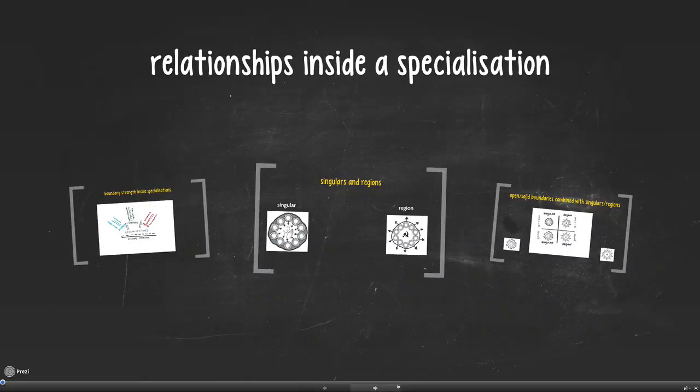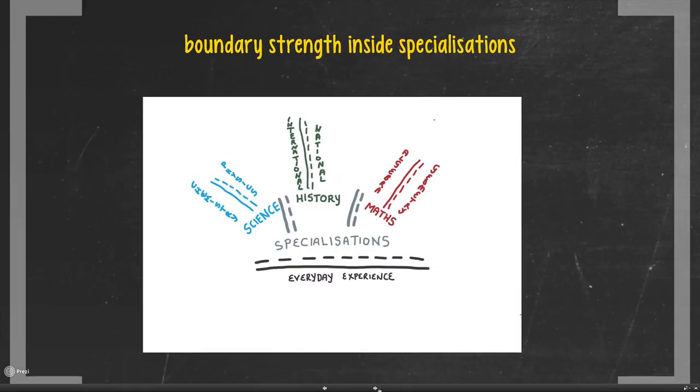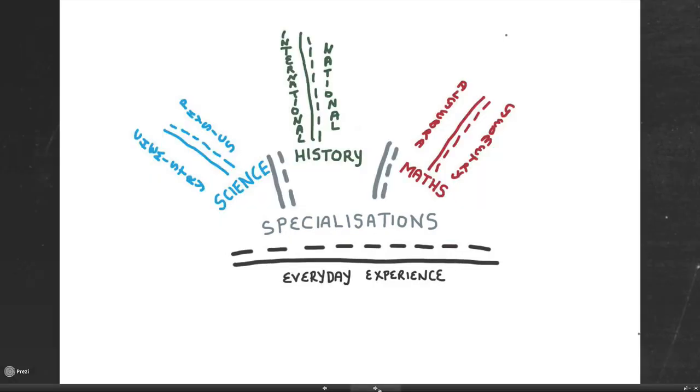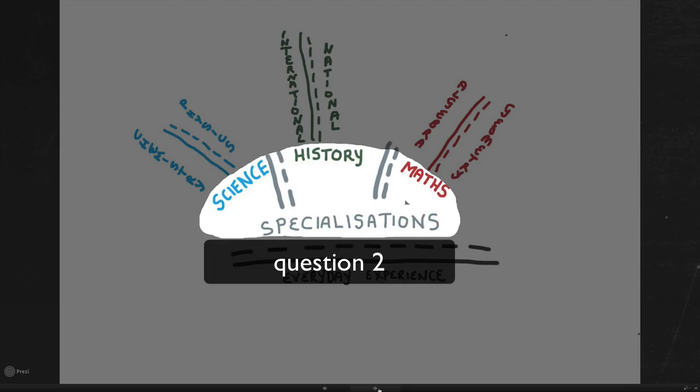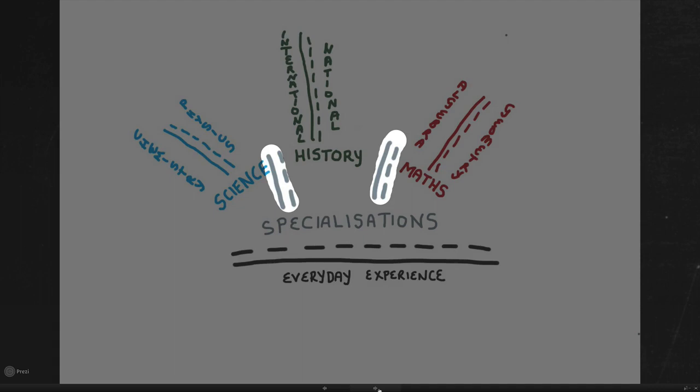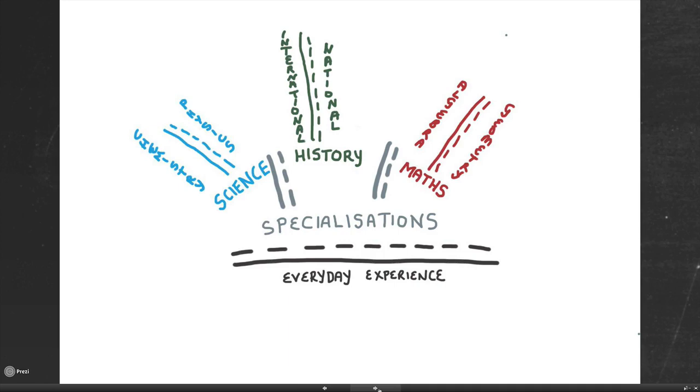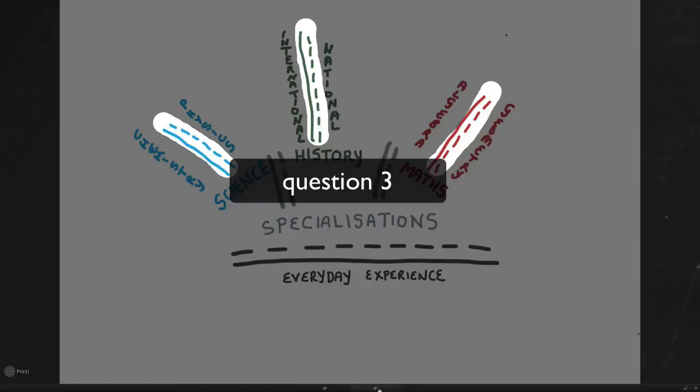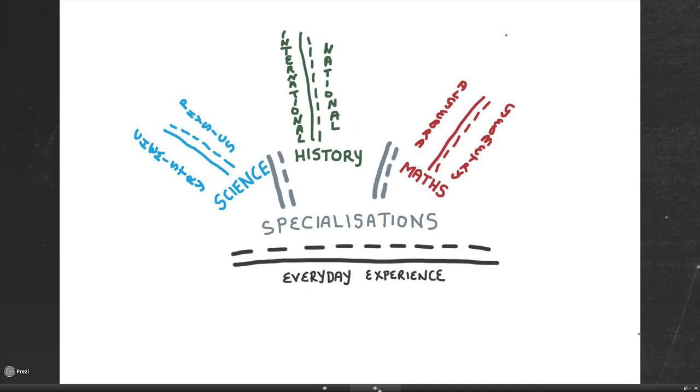The third question we ask ourselves when doing educational analysis deals with the relationship inside a specialization. Notice there is a fairly logical relation between the first, the second, and the third question. The first question asked about the relationship between everyday experience and specialization. Then the second question honed in on specializations and looked at the boundary strength between different kinds of specializations. Now the third question hones in on a specialization and asks what are the boundary strengths inside a specialization. You should be getting the pattern by now, but we can see it quite clearly on the diagram in front of you.